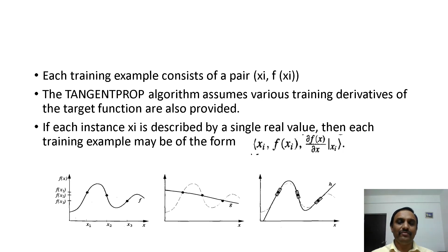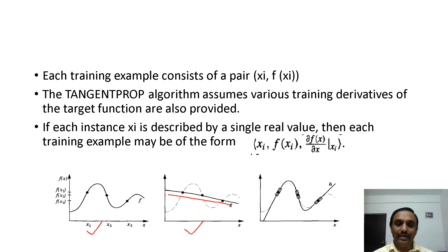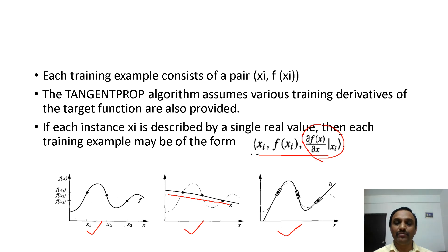It takes training examples in the form of three-tuples: xi is the instance, f(xi) is its training value, and the third is the training derivative or slope. By fitting these values, the learner has a better chance to correctly generalize from the training data, giving a more accurate estimate of the true target function f. In the diagram, we have three graphs. The first shows the representation x and its training data. The second graph shows the backpropagation algorithm, where smooth interpolation is observed. It considers data in the form of two-tuples only. The third graph is for the tangent prop algorithm, which considers three-tuple training data. By considering this slope, it gives more accurate results than the backpropagation algorithm.